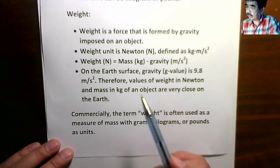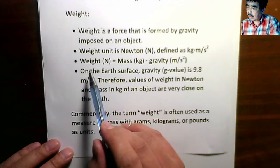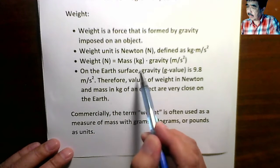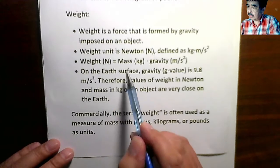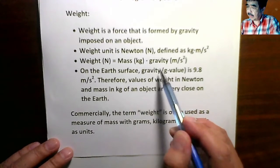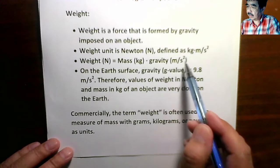The equation. And the equation between weight and mass is this. Weight, okay, Newton equals mass kilogram multiplied by gravity meter over second square.